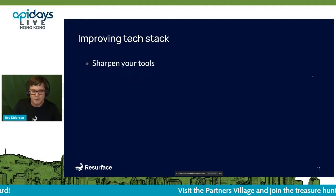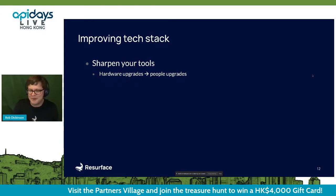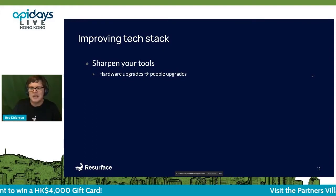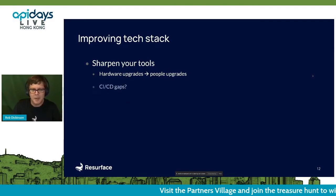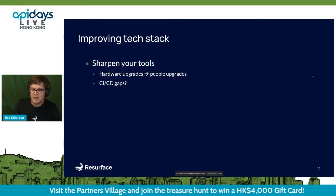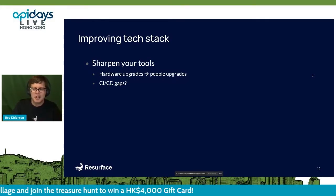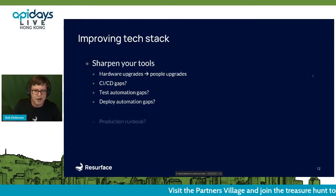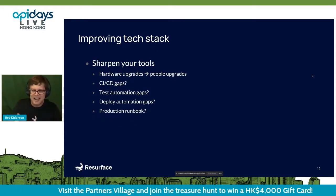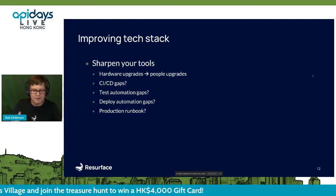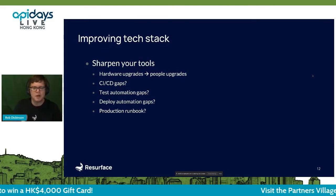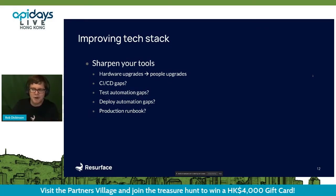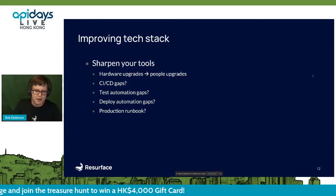In terms of improving your tech stack, if it's not about huge changes, what is it about? It's really about the fundamentals — sharpen your tools. Make sure people have the best laptops they can have; it's not the time to be hung up on things you can easily write a check to fix. Fix gaps in your CI/CD pipeline. Fill gaps in your test automation, deployment automation, and production runbook. A lot of what you have now you'll be able to carry forward.